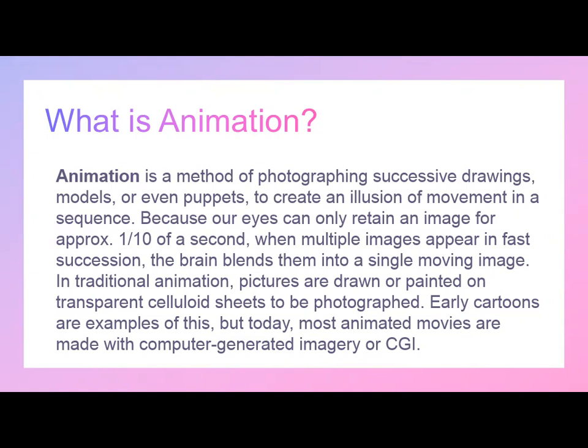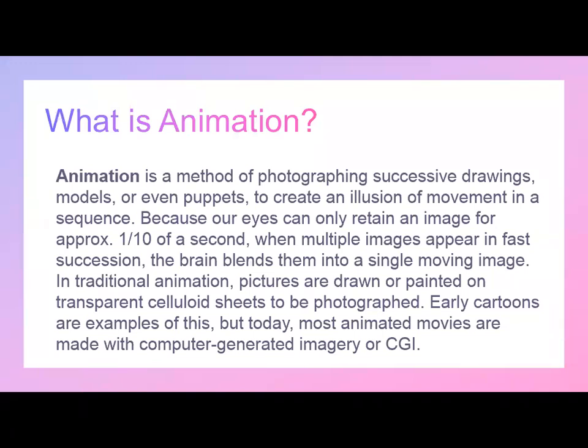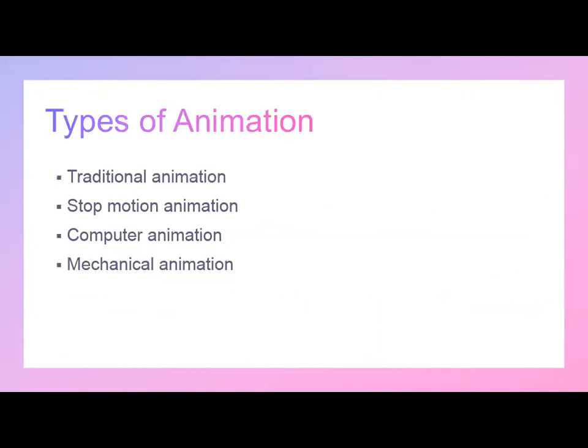in fast succession, the brain blends them into a single moving image. In traditional animation, the pictures are drawn or painted on transparent celluloid sheets to be photographed — early cartoons are examples of this. Today most animated movies are made with computer-generated imagery or CGI. The four major types of animation are traditional animation, stop motion animation, computer animation, and mechanical animation.